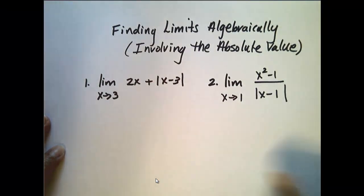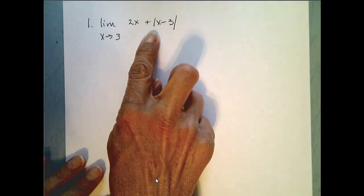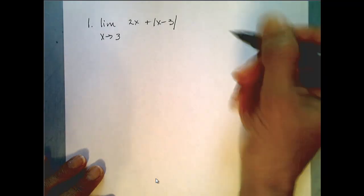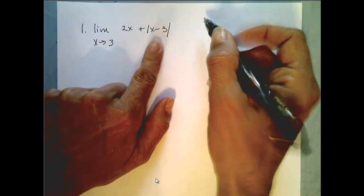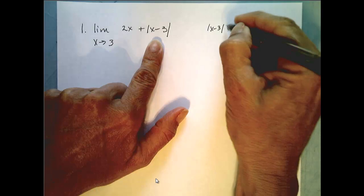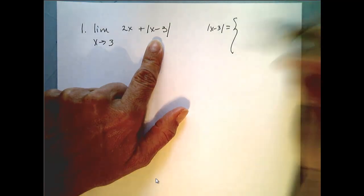Let's start with the first example. We're going to look at the limit as x approaches 3 of the function 2x plus the absolute value of x minus 3. It's always a good idea to rewrite absolute value functions as piecewise functions, as they help us understand what's happening for different values of x.